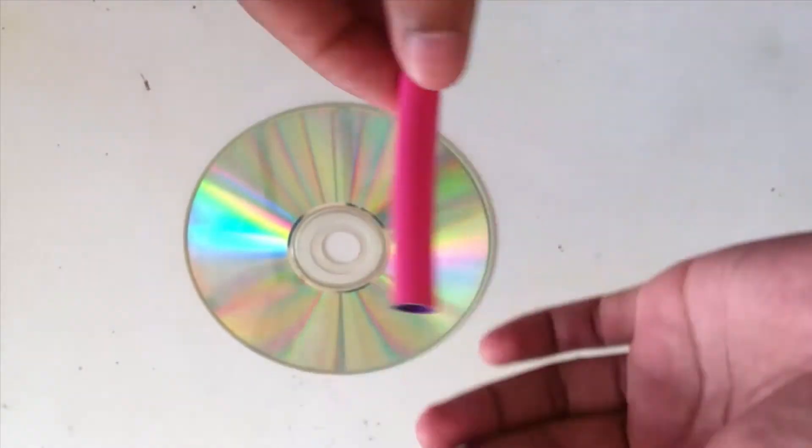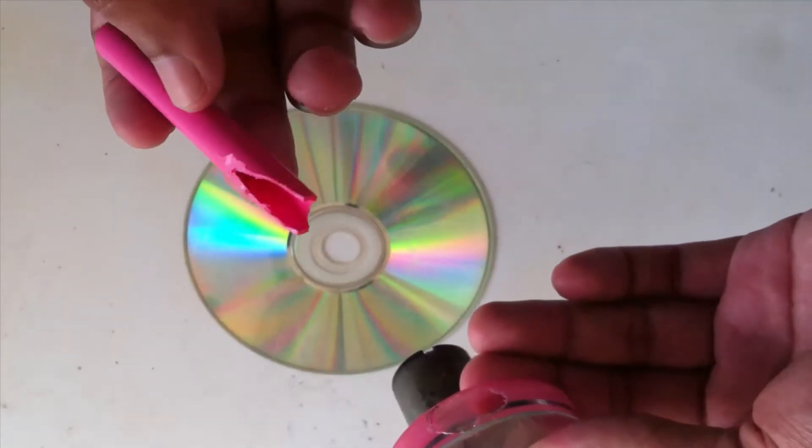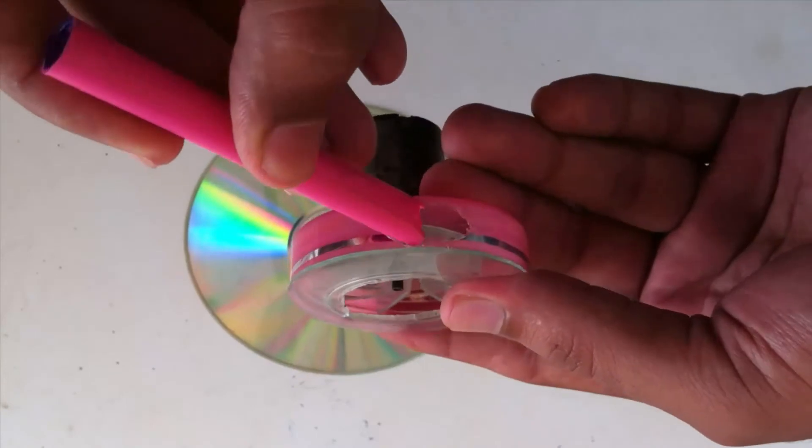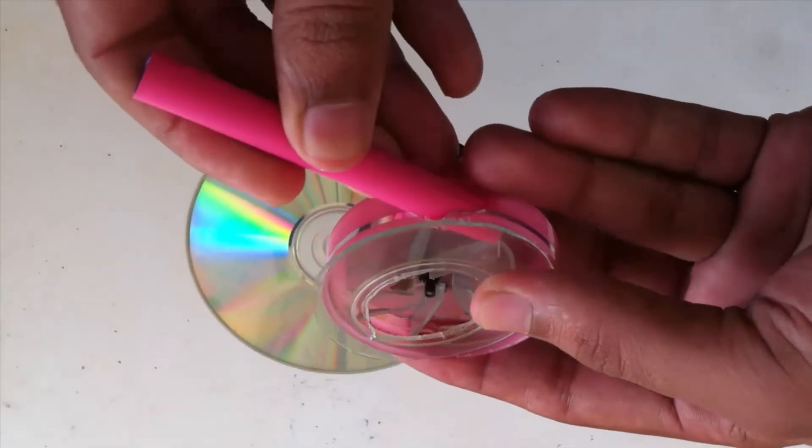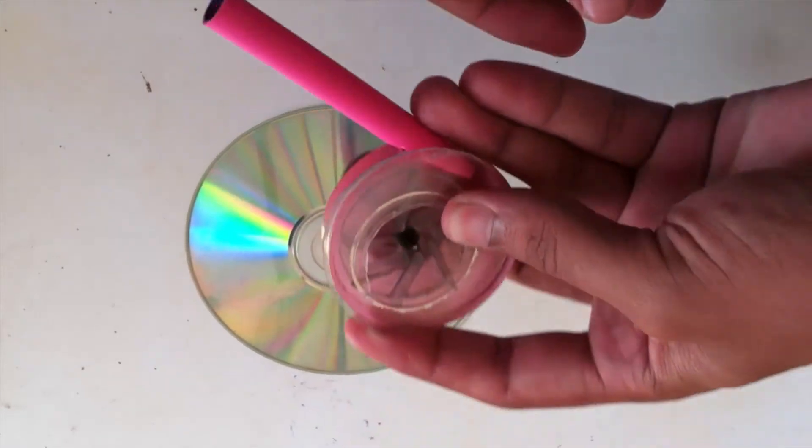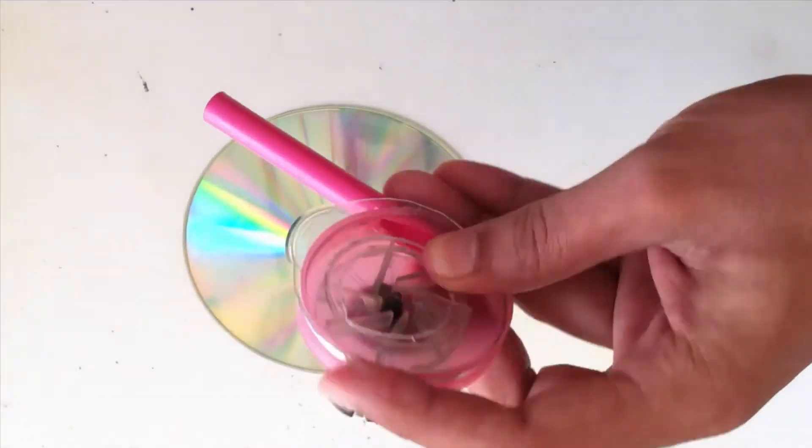So we have another hole for this pipe. This pipe we can get from any pencil. We need to use a glue gun to fix this stuff.